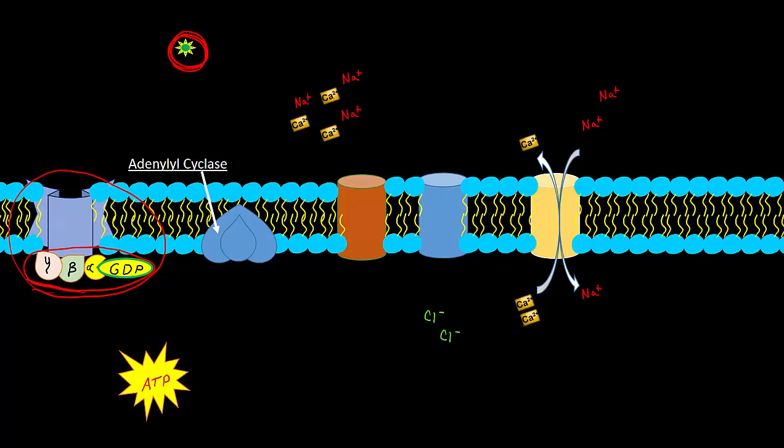Next up we have adenylyl cyclase which is the enzyme in play here. It's responsible for taking ATP and creating cyclical AMP out of it.